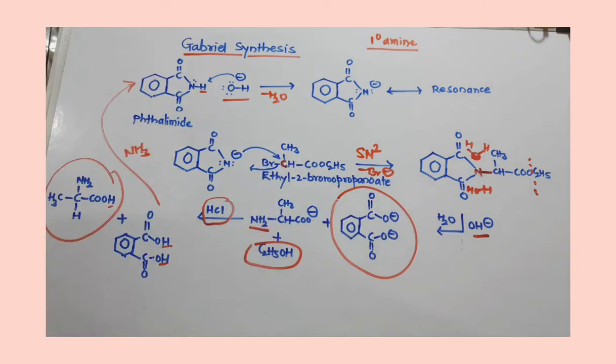And this phthalamide can be used for the generation of alpha amino acid. Here in this case we produce alanine. So in this way we can prepare alpha amino acid by using this synthesis. Thank you.